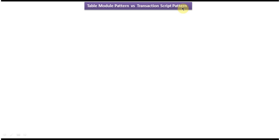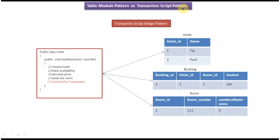First watch those videos and then come back to this video so that you can understand it clearly. We will start with the Transaction Script pattern using the scenario of booking a hotel room. On the right side there are three tables: 'hotel' with hotel information, 'room' with room number and number of bedrooms, and 'booking' which stores whether a particular room is booked or not.